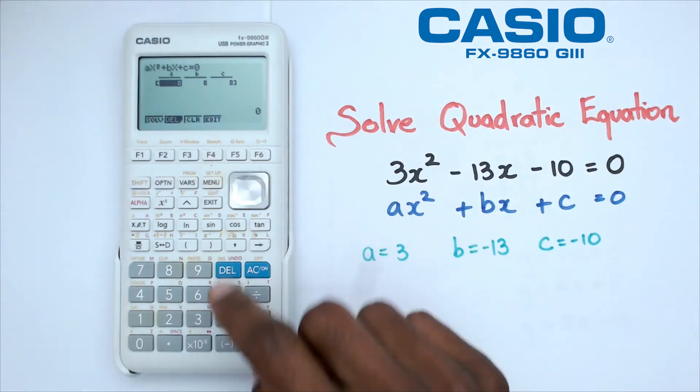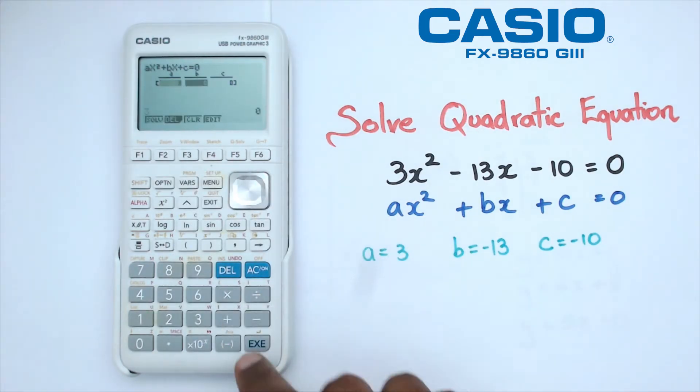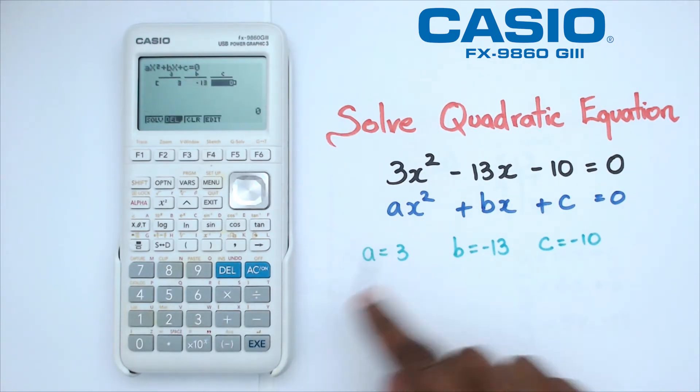Now we put in those values in the calculator. So under a we're going to put in 3, press EXE. For b we've got minus 13 EXE, and for c we've got minus 10. Press EXE.